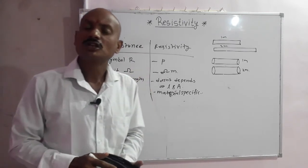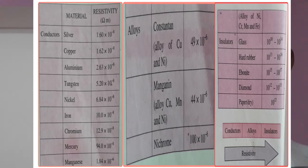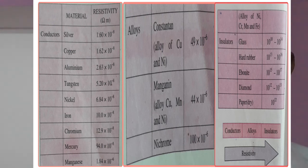You can see that different materials — conductors, alloys, and insulators — have different resistivities. Conductors have the lowest resistivity, alloys have higher resistivity, and insulators have the highest resistivity. If resistivity is low, resistance is low and electric current flows easily. Insulators have the highest resistance, so electric current does not flow. Silver has the lowest resistivity among all materials, making silver the best conductor.